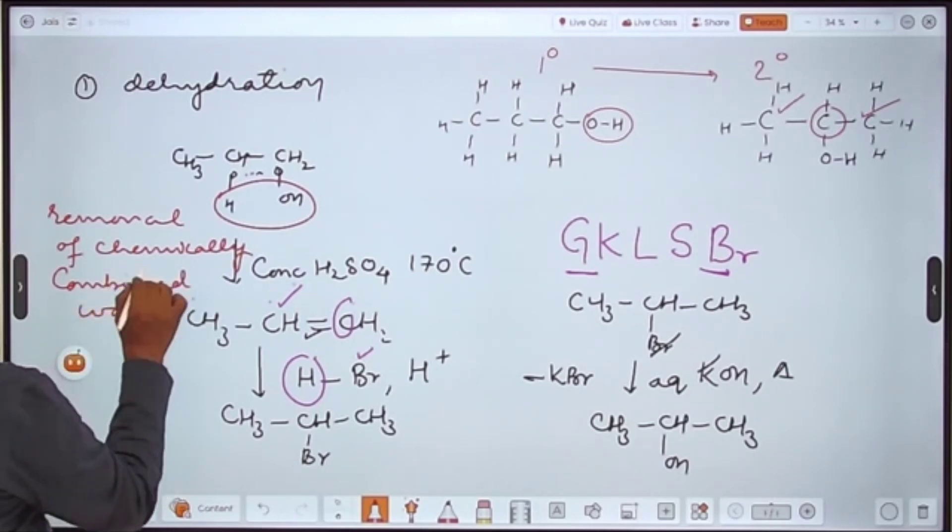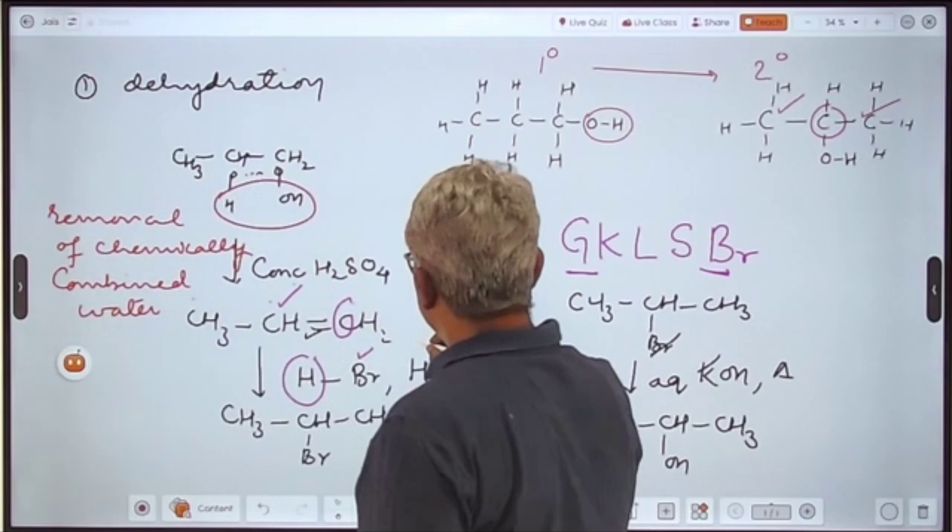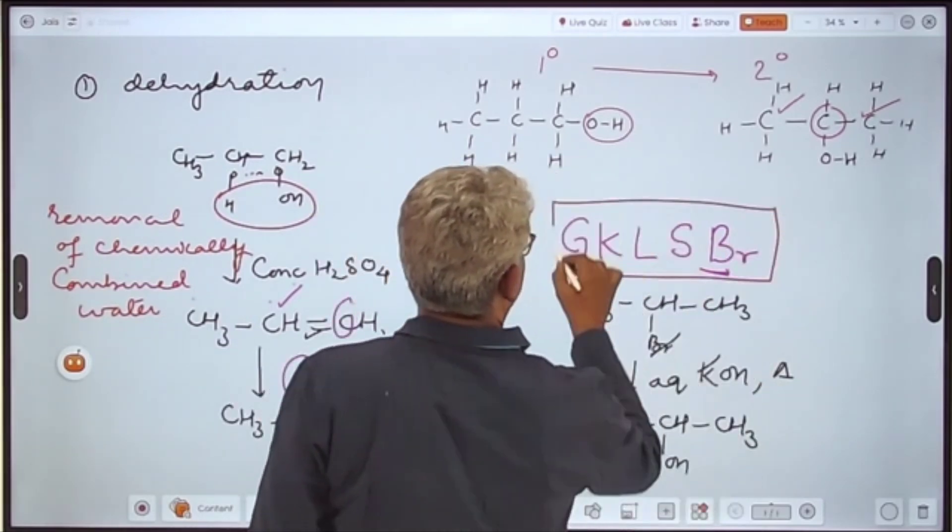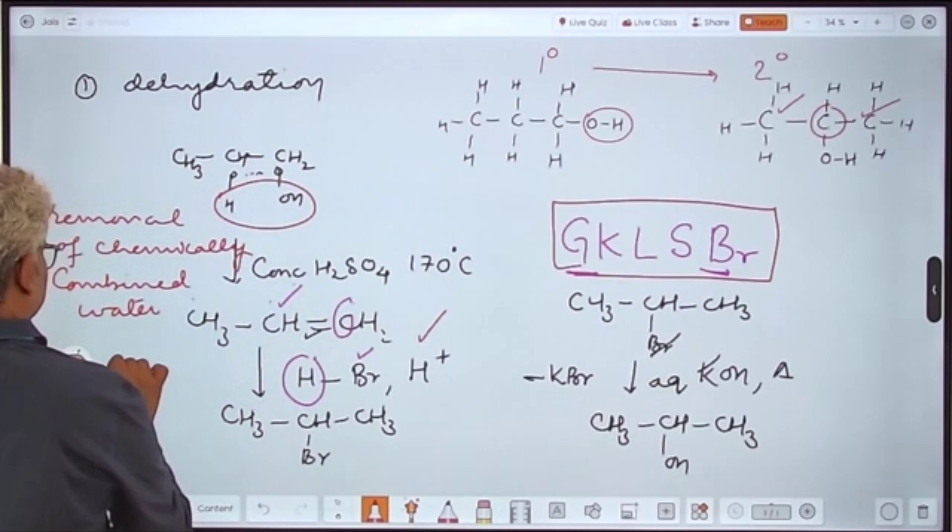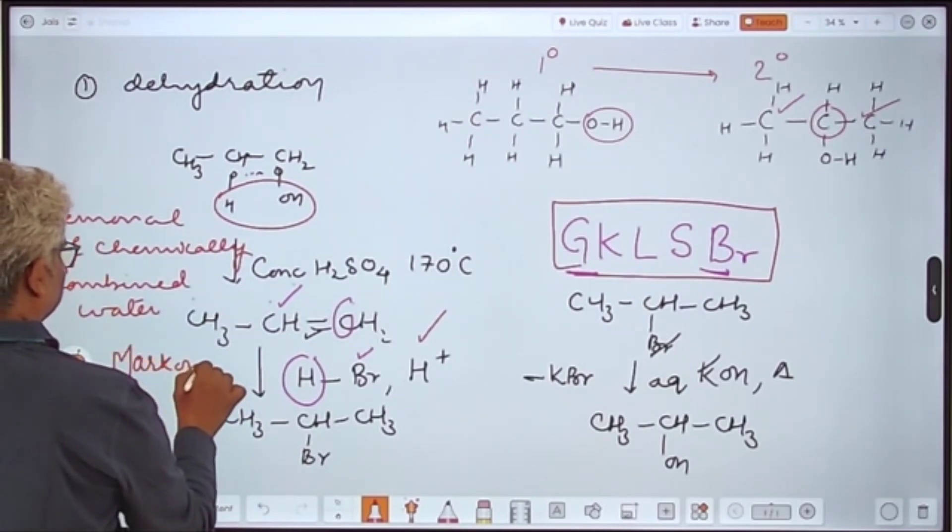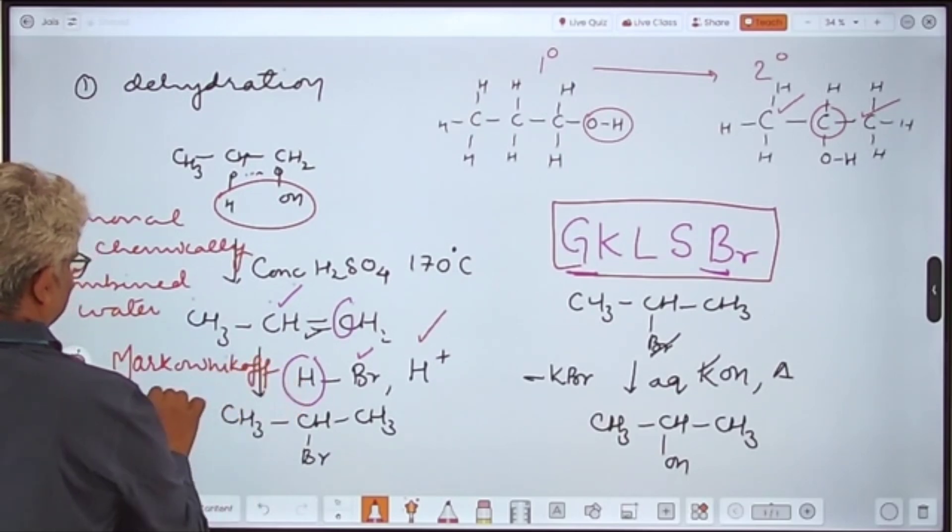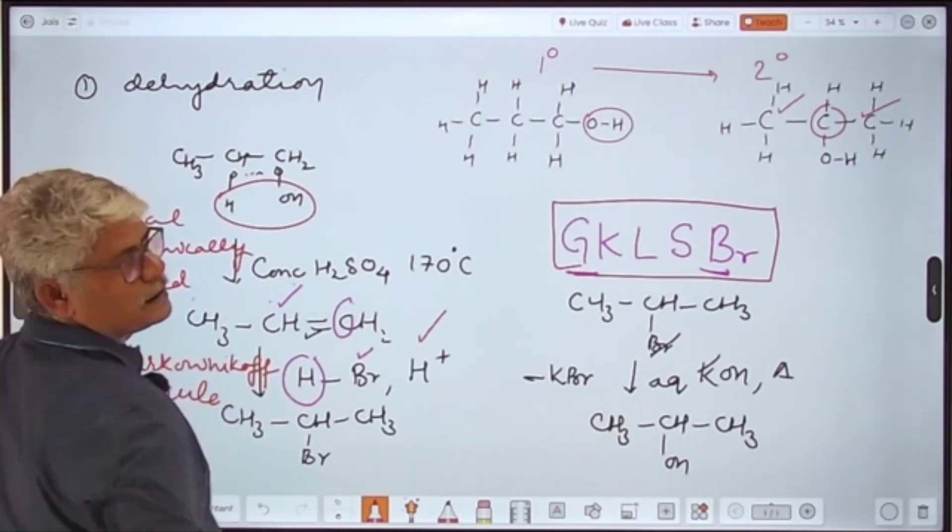And the second one is HBr, which is garib ki lugai sabki bhajai. And this is in accordance with Markovnikov rule, which can be studied in separate topic. Thank you.